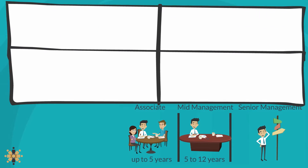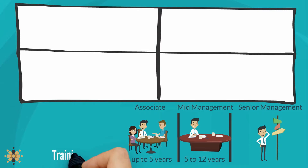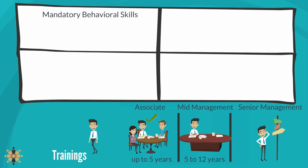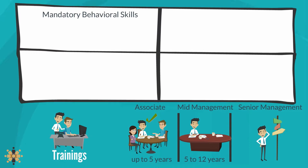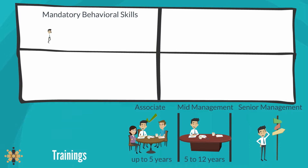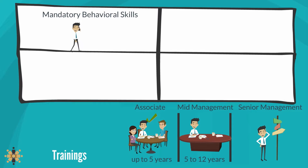At each level, there are four sets of trainings. Set 1: mandatory behavioural skills. For example, a project leader at the associate level should be able to drive his goals and goals one level below, motivate his teams, cross-cultural awareness, etc.